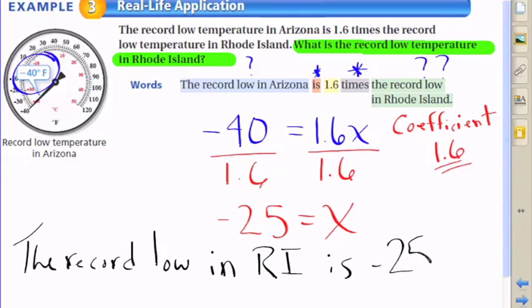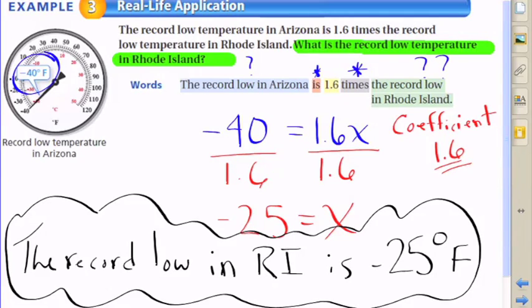Since we solved for x as -25, there is the answer to that question. The record low in Rhode Island is -25 degrees Fahrenheit. And so there you have it.